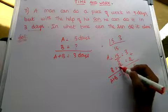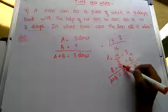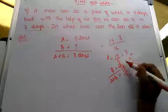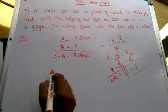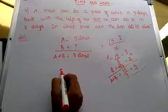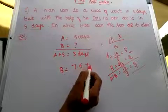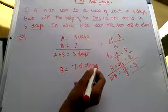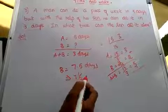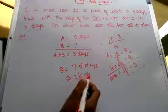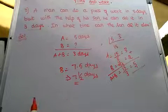15 divided by 7.5 equals 2. So the actual answer is 7.5 days. B alone can complete the work in 7 and 1/2 days. Is it clear? We needed to add 2: since 5 minus 3 equals 2, and 15 divided by 7.5 equals 2, therefore the son alone takes 7.5 days.